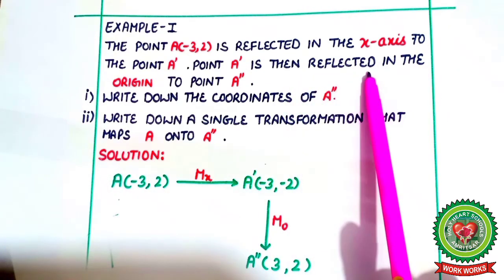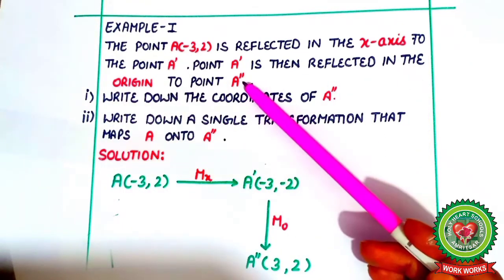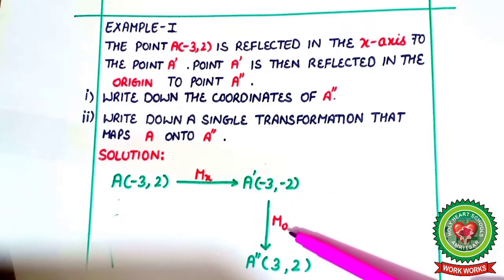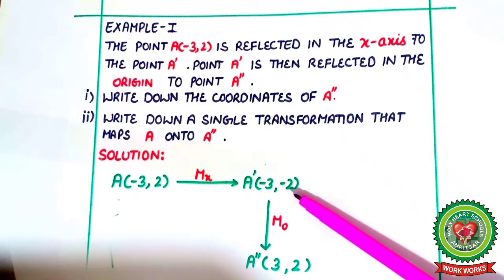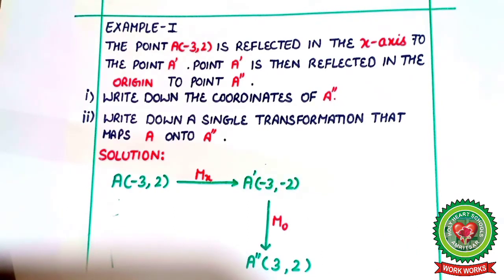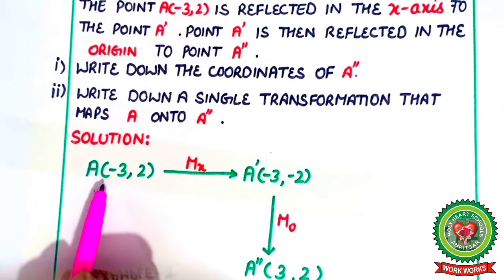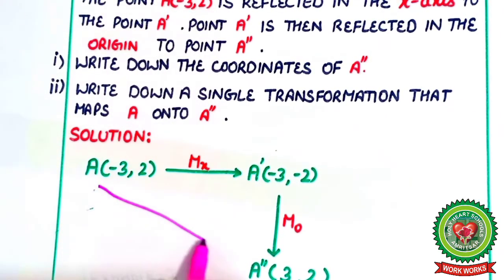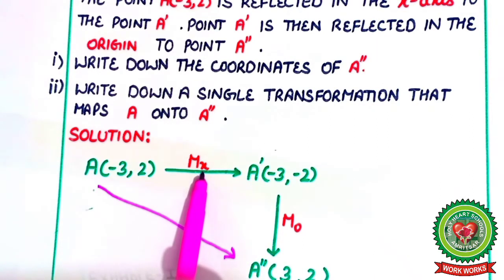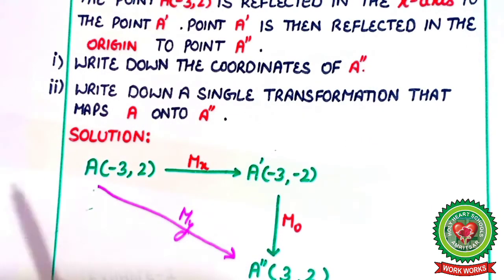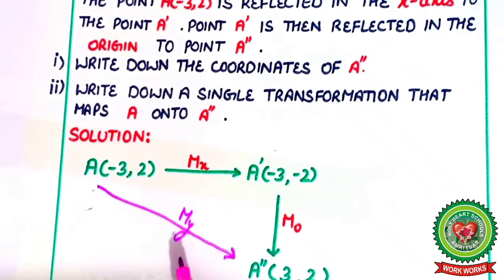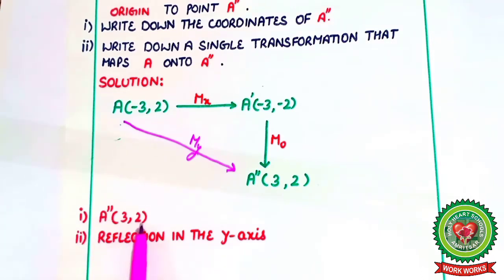Now point A' is then reflected in the origin, giving A''. After reflection in the origin, sign of both abscissa and ordinate will change. So A'' coordinates are (3, 2). Second part: write down a single transformation that maps A onto A''. X-axis and origin reflection are already done, so left out is reflection in y-axis. Single transformation is reflection in y-axis. A'' is (3, 2) and single transformation is reflection in the y-axis.